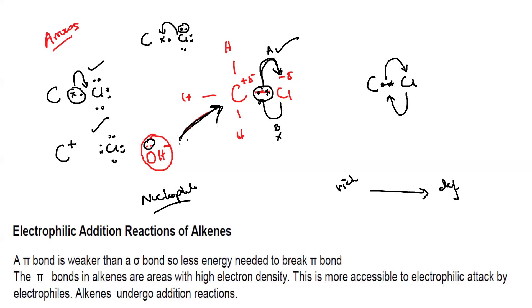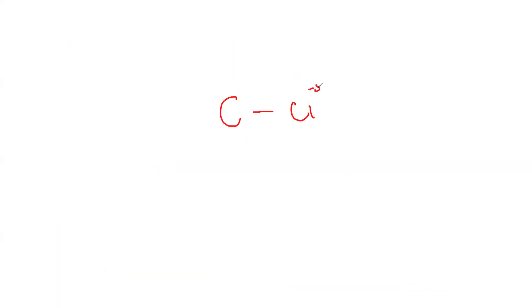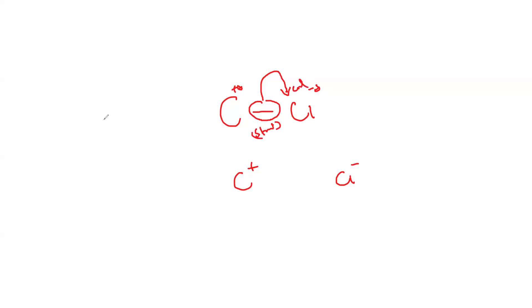If it is a bond breaking, we draw an arrow from the bond. Chlorine is partial negative and carbon is partial positive; chlorine takes those two electrons, so it becomes C⁺ and Cl⁻. We draw an arrow from the bond to the atom pulling the electrons — that is where electrons start and where they end. Same thing when OH⁻ was attacking: it has a lone pair and a negative charge, so electrons start at OH⁻ and end at carbon.